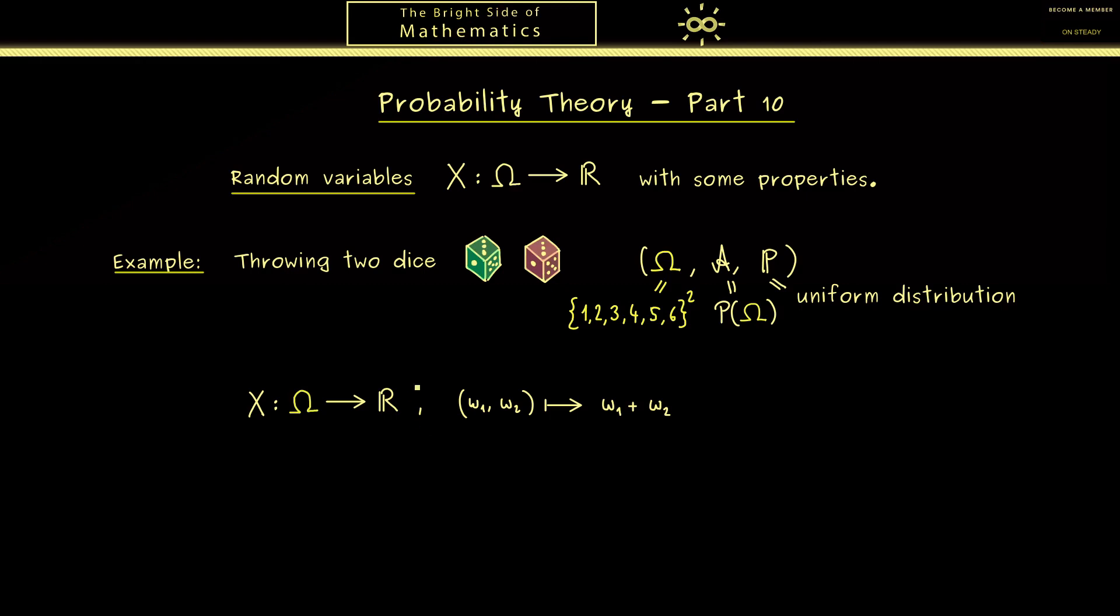What we can remember in this case is that the input is a sample and the output is a number. So this is a typical example of a random variable where you see it simply extracts the information we are interested in. Therefore, later we will work with a lot of random variables.